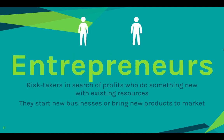The fourth and final factor of production are entrepreneurs. Entrepreneurs are risk takers — they want to make a profit, they have an idea, and they want to do something new with existing resources. So they start new businesses or bring new products to market. One example that comes to mind is the show Shark Tank, and we're going to be doing a Shark Tank project in here. Essentially, Shark Tank is where people come up with an idea, start a product, make a prototype, then go to the sharks to get investments to build their business.